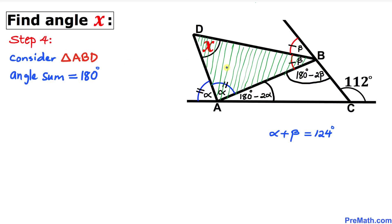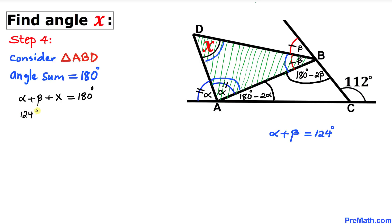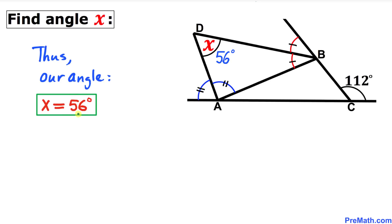In this next step, let's focus on triangle ABD. We know that the sum of all three angles in this triangle is equal to 180 degrees. So we can write alpha plus beta plus X equals 180 degrees. We know our alpha plus beta is 124 degrees, so therefore we can write 124 degrees plus X equals 180 degrees. Subtracting 124 degrees from both sides, our X turns out to be simply 56 degrees. So our angle X is 56 degrees.